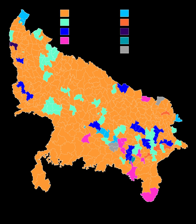Assembly elections in Uttar Pradesh were held between 11 February and 9 March 2017 in seven phases. The result was declared on 11 March 2017.